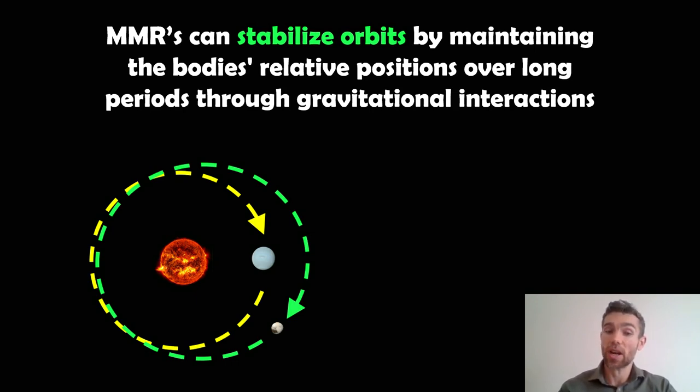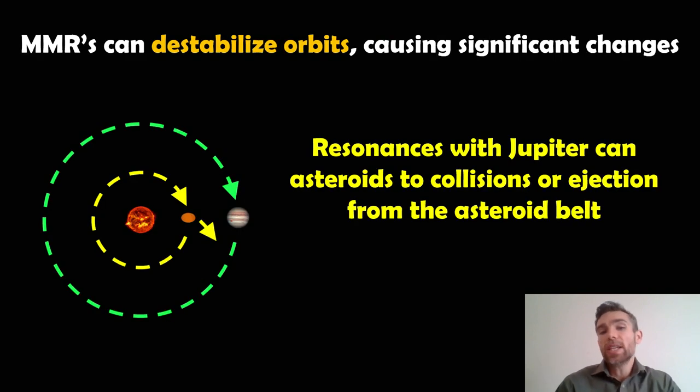These gravitational interactions can also destabilize orbits. They can do different things. For example, Jupiter can cause significant effects on asteroids in the asteroid belt, destabilizing them. That leads to collisions with other asteroids, or they can be ejected from the asteroid belt into orbits where they'll collide with other planets. So they can stabilize or destabilize—it depends on the system.